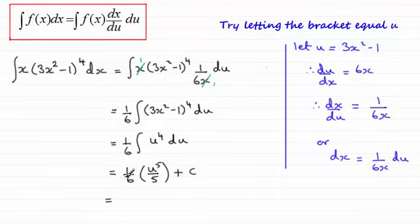Now, 1 sixth times the fifth here is going to give us 1 thirtieth. And so what we've got is 1 thirtieth times u to the power 5. u is 3x squared minus 1. So we've got 3x squared minus 1. And that's now all to the power 5. And then plus c.